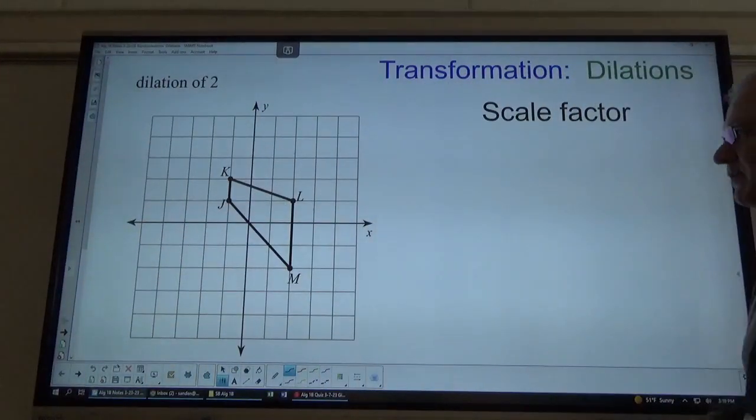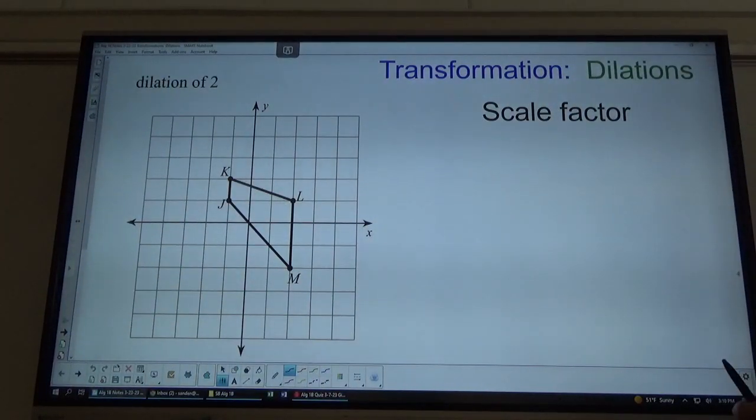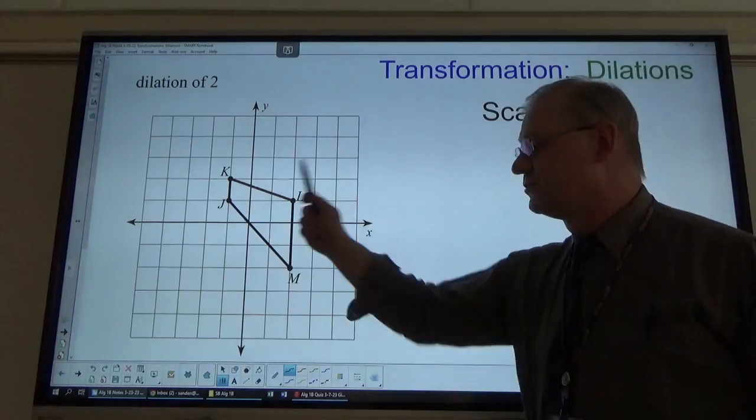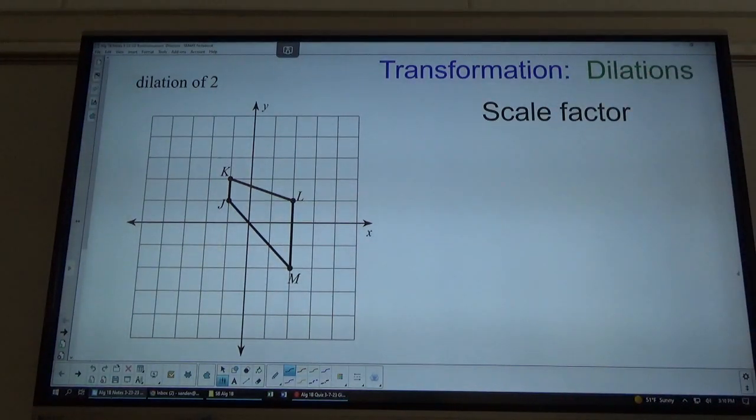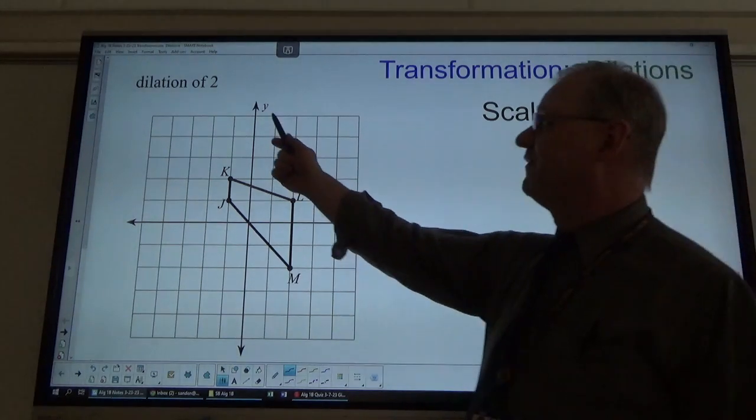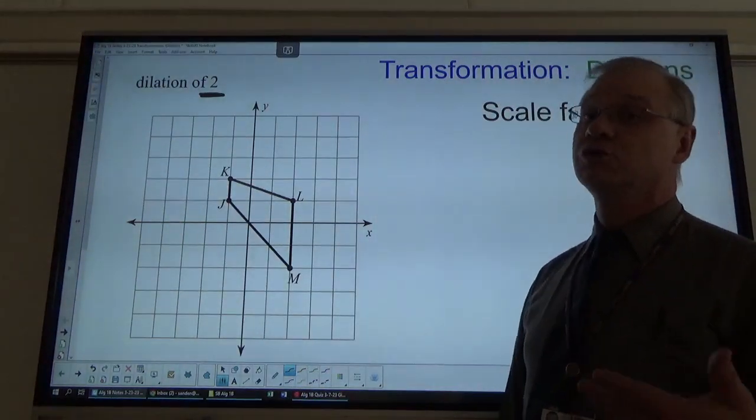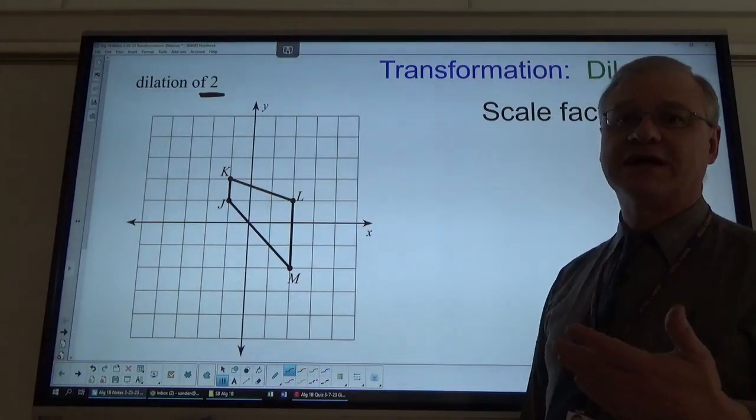Dilations happen from a particular point of view. For all of these dilations, we're going to use the point of view of the origin. Now, scale factor is going to be a major part of a dilation. You have to know what the scale factor is. All of the scale factors are going to be right here. This is a dilation of two, which means a scale factor of two.